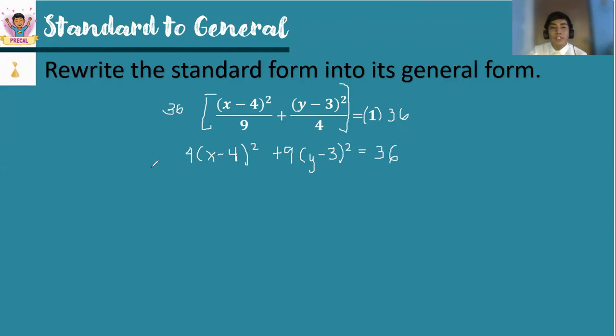Now we perform squaring a binomial. So we have 4 times squared the first term, x². -4x times 2 is -8x. We squared the last term. So that is +16. Plus 9, we squared the first term. So we have y². Multiply the first term and the second term twice. So we have -6y. Then squared the last term. -3 times -3 is +9 = 36.